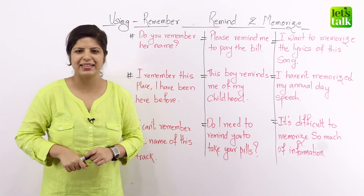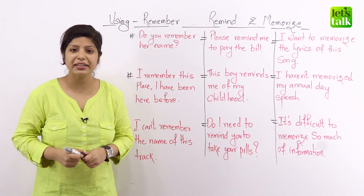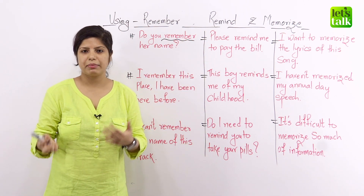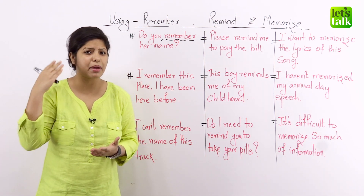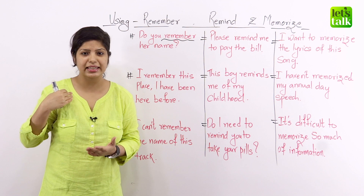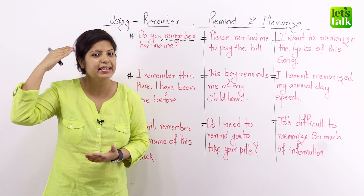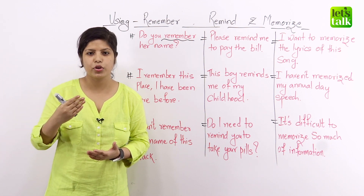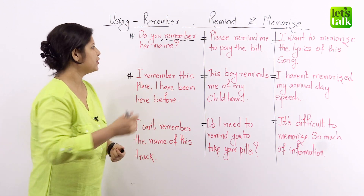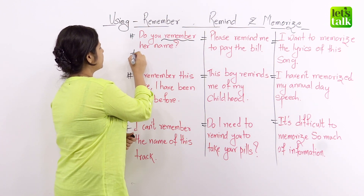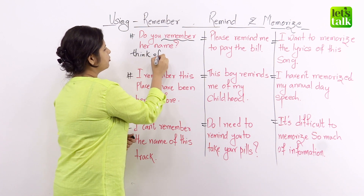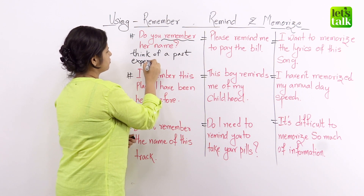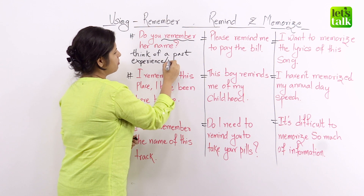Let's look at the first sentence: Do you remember her name? So here, another person is asking me, 'Hey Sonia, do you remember her name?' That person is asking me if I myself can think, go into my memory and think of that person's name. So remember is used when you think of a past experience or a memory yourself. Very important.